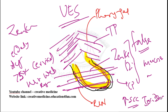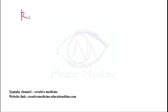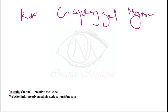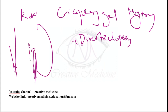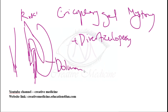Investigation of choice is barium swallow. Treatment of choice is cricopharyngeal myotomy with diverticulopexy. Alternative procedures include diverticulectomy and Dohlman's procedure, where the septum between the esophagus and the diverticulum is broken.